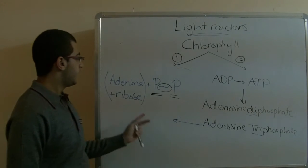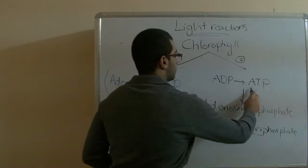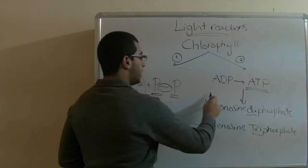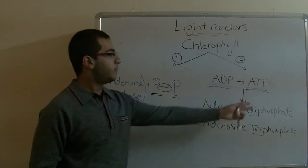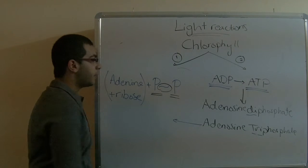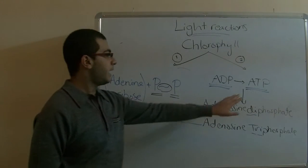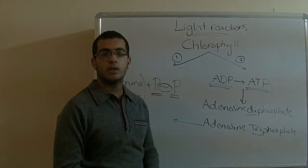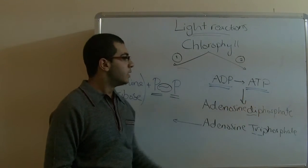Triphosphate is written as ATP, and diphosphate is written as ADP. The ATP is considered the universal currency of energy. Any type of energy found inside the cells is represented by ATP.